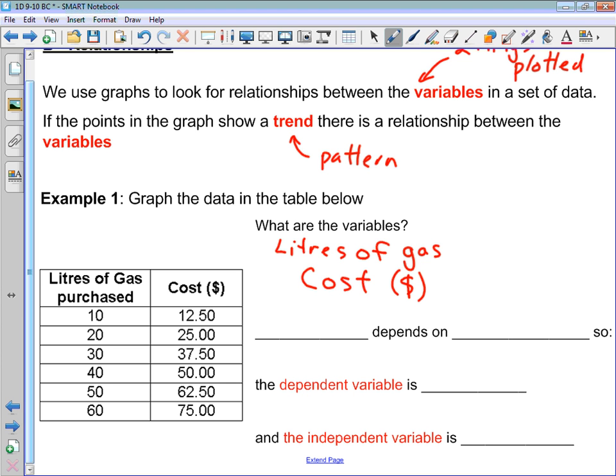Well, what we have to decide is which variable depends on the other one. So the way we do this is we think about it in our head. Do liters of gas depend on cost or does the cost depend on the liters of gas? And which one makes a little bit more sense? Well, I think it makes more sense to say that cost, what you pay, depends on the liters of gas that you purchase. Purchase more liters, you're going to have to pay more.